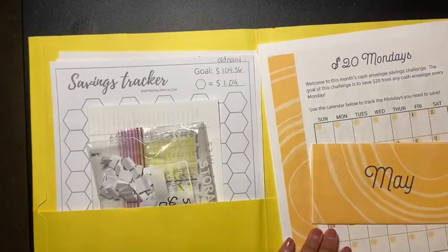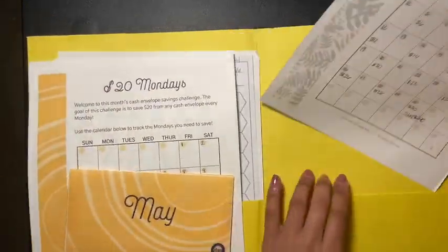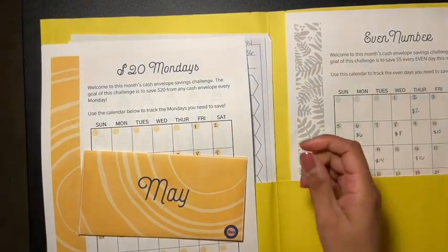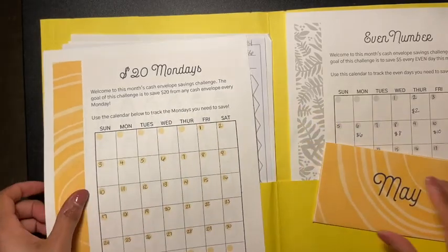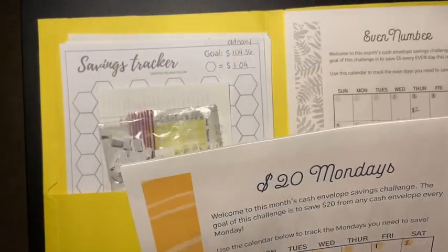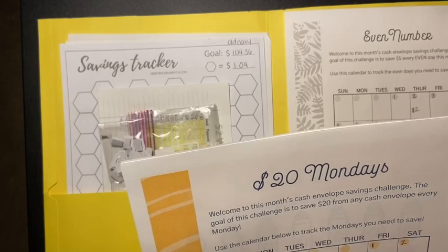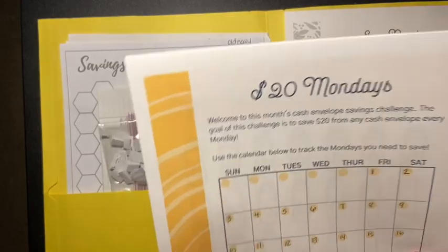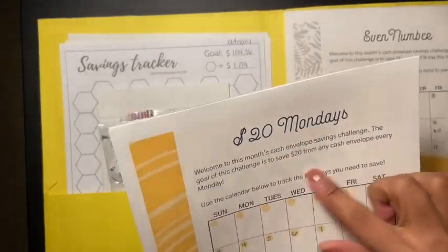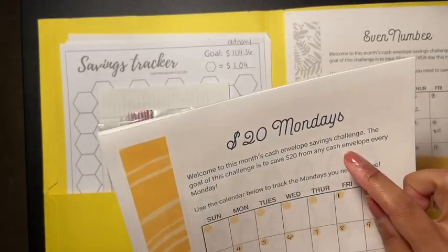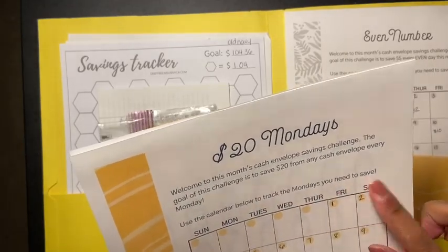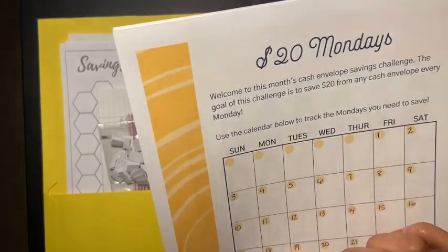Now let's go on to May. Today is May 1st, and I'm putting out this video today. May's challenge is: the goal of this challenge is to save $20 from any cash envelope every Monday. I'm going to make sure I follow these rules. Use the calendar to track the Mondays — the 4th, 11th, 18th, and 25th.